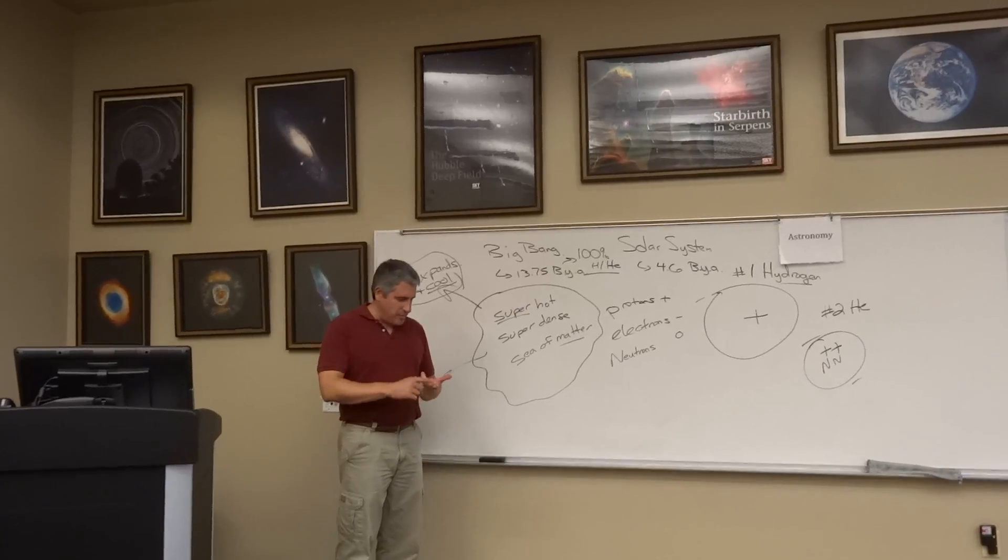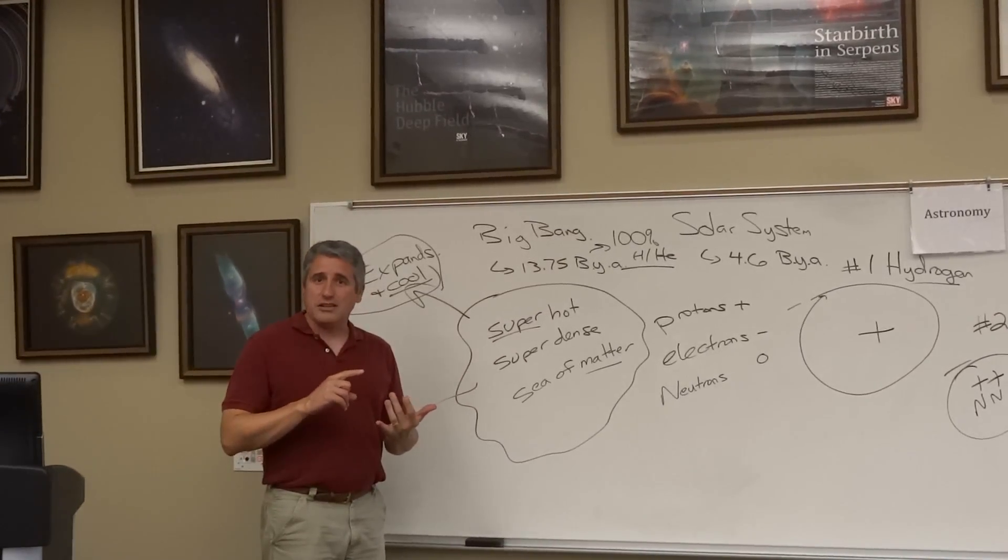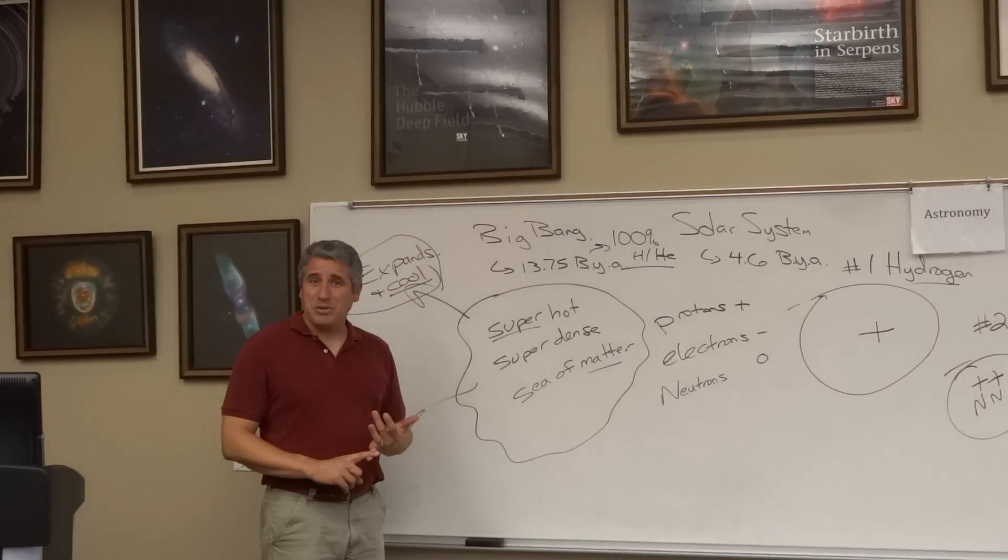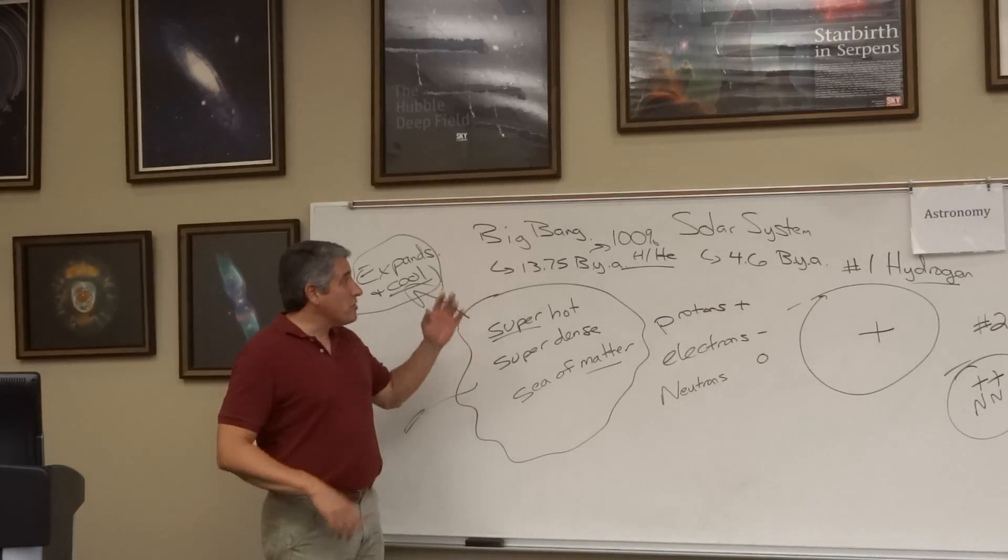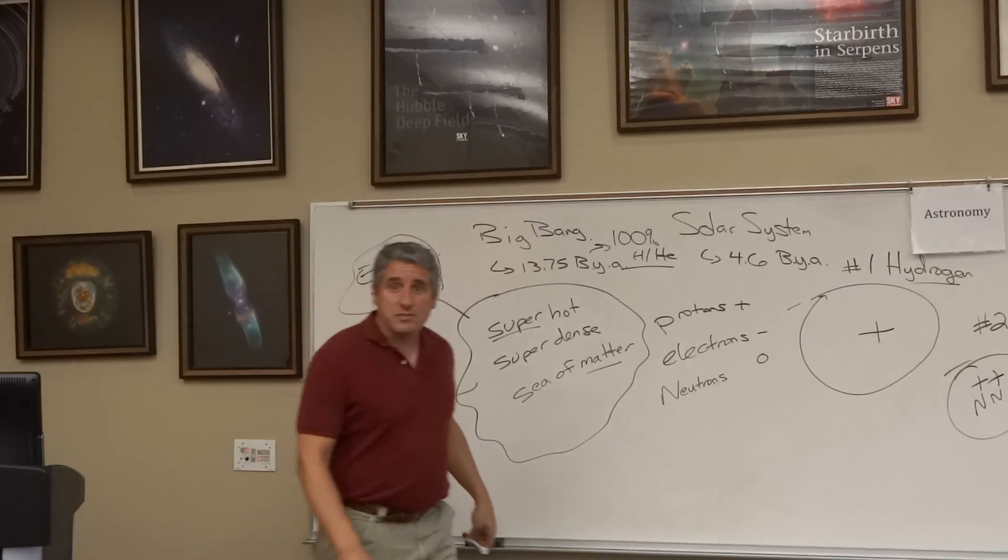All the carbon, the nitrogen, the oxygen - everything on the periodic table that we're going to use for life, for terrestrial planets, is created in these supernova explosions.